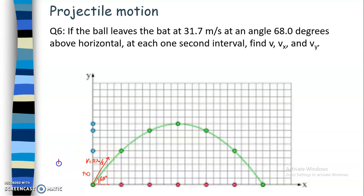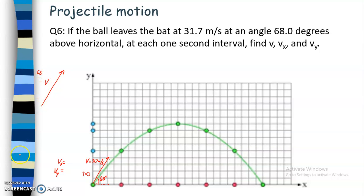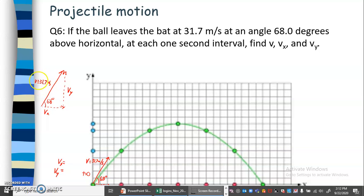What I want to find is vx and vy. I already know the velocity and I know the angle, so I can use trigonometry. This is v equals 31.7 meters per second — that's that vector. I drew in the horizontal line and labeled it as v sub x, and a vertical arrow as v sub y. As stated in the problem, this is a 68 degree angle.